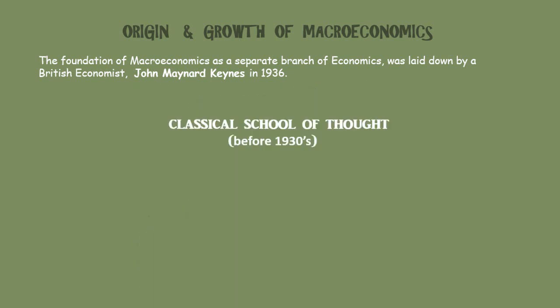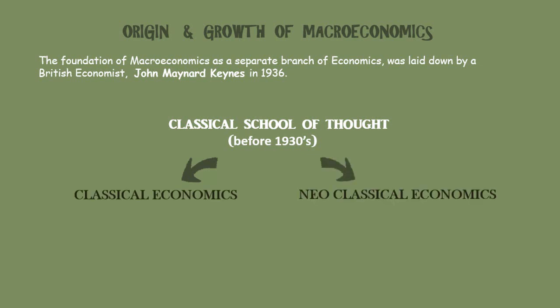He used the term classical to refer to virtually all the economists who had written on macroeconomics before the 1930s. The classical school of thought was actually divided into two sections: classical economics and neoclassical economics. Classical economics was dominated by the work of Adam Smith in 1776, David Ricardo in 1817, and John Stuart Mill in 1848.